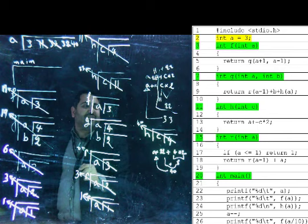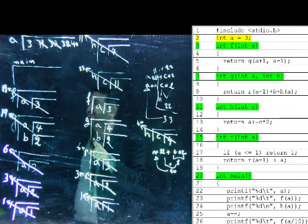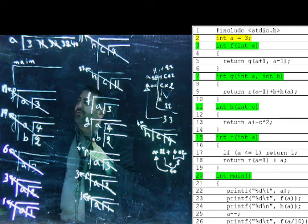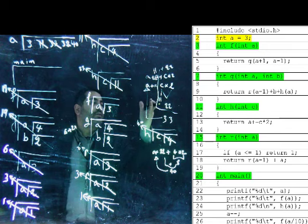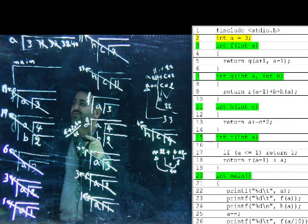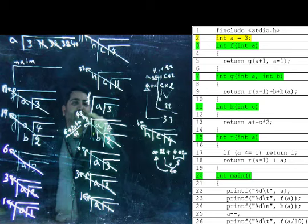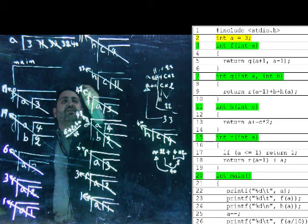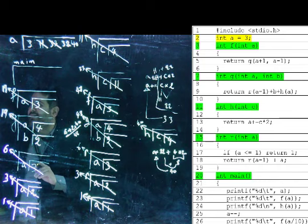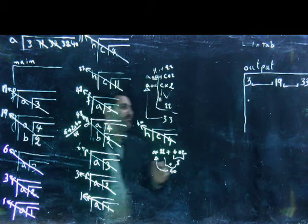Going back to g at line 9: r of a minus 1 is 6, plus b which is 2, plus h of a which is 40 — so 6 + 2 + 40 = 48. G returns 48. Back to f: return g of a plus 1, a minus 1 is just the 48. F returns 48. Back in main at line 26: the output of line 26 is 48, tab.